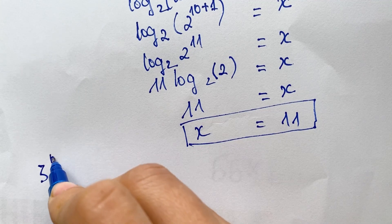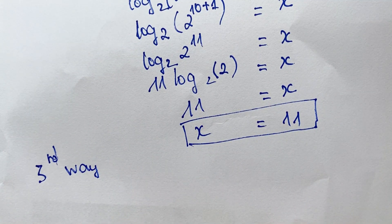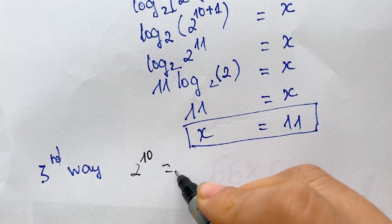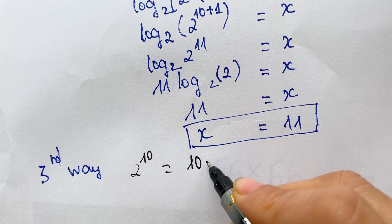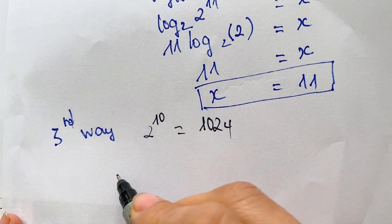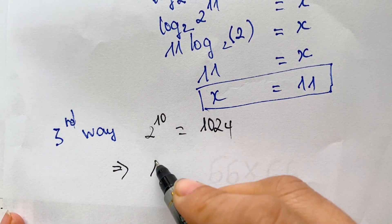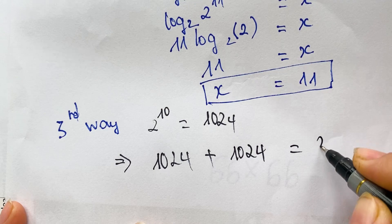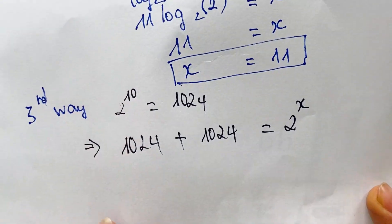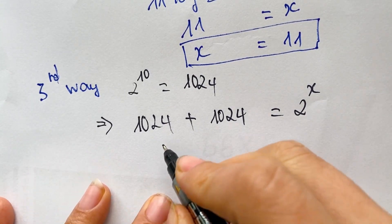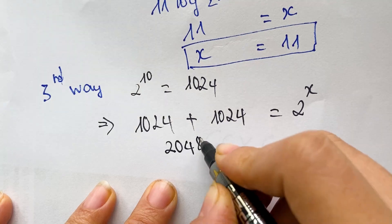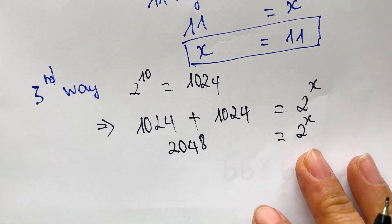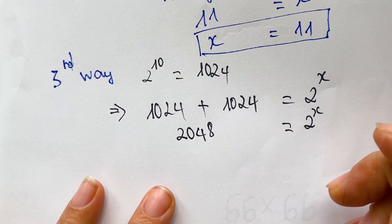Now the third way. Everyone, look at that: 2 power 10 equals 1024. So we can rewrite the equation as 1024 plus 1024 equals 2 power x. Next, we have 2048 equals 2 power x.